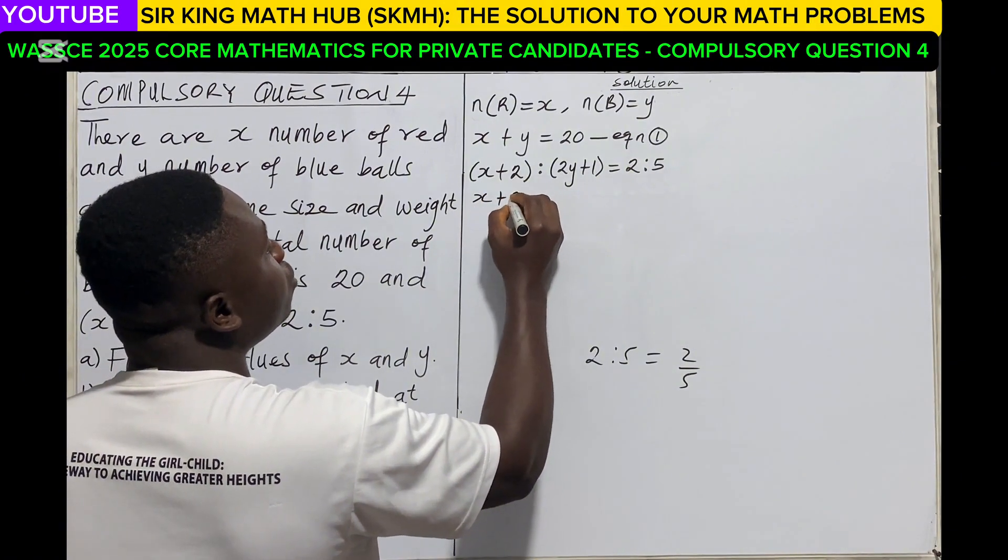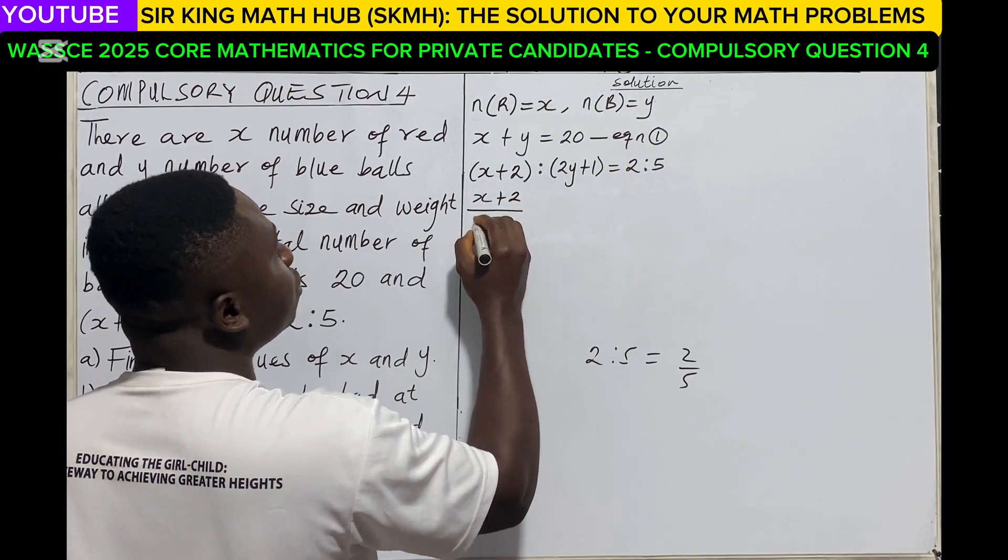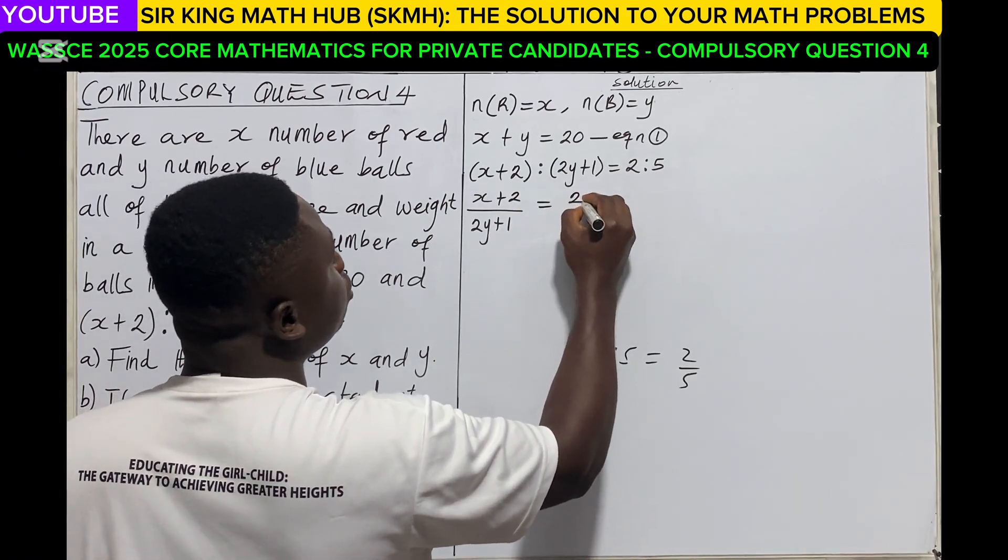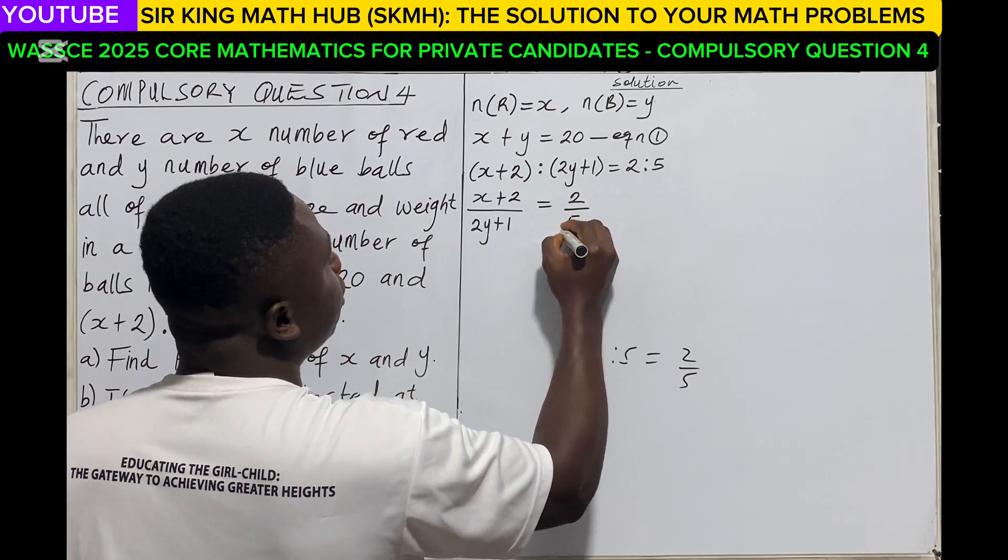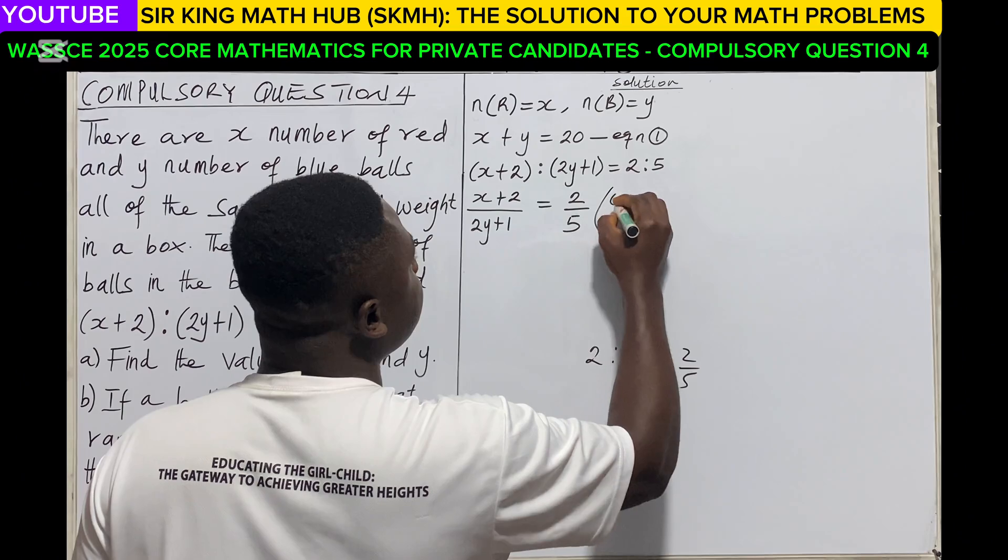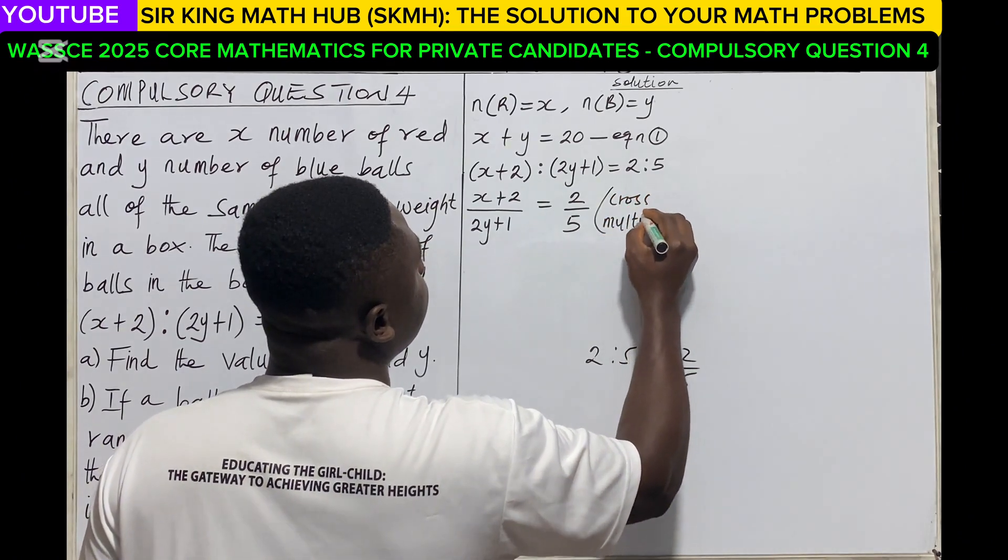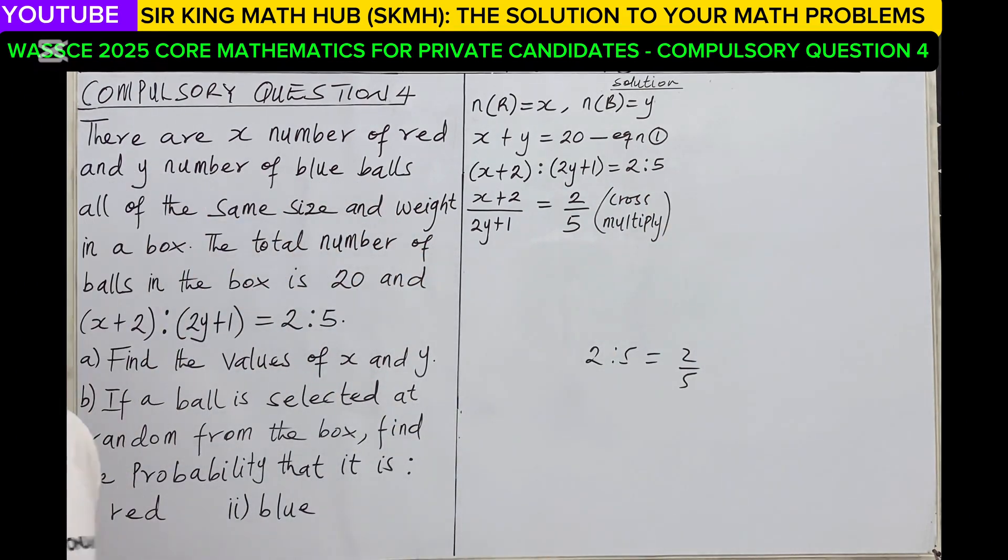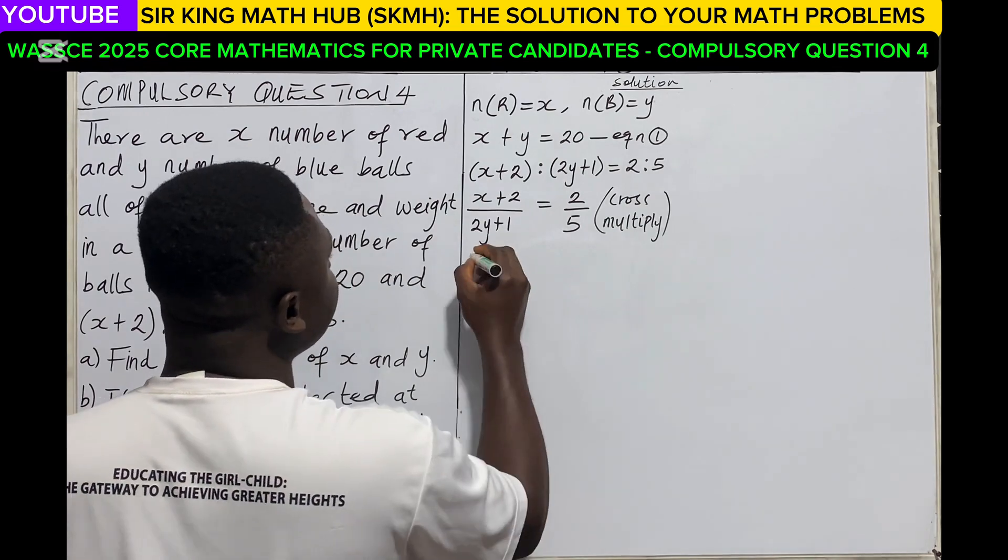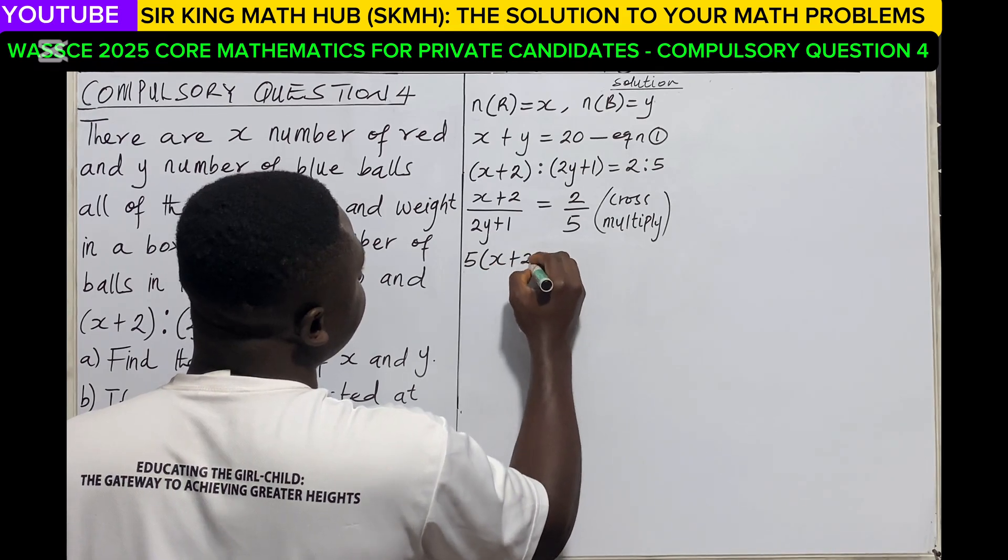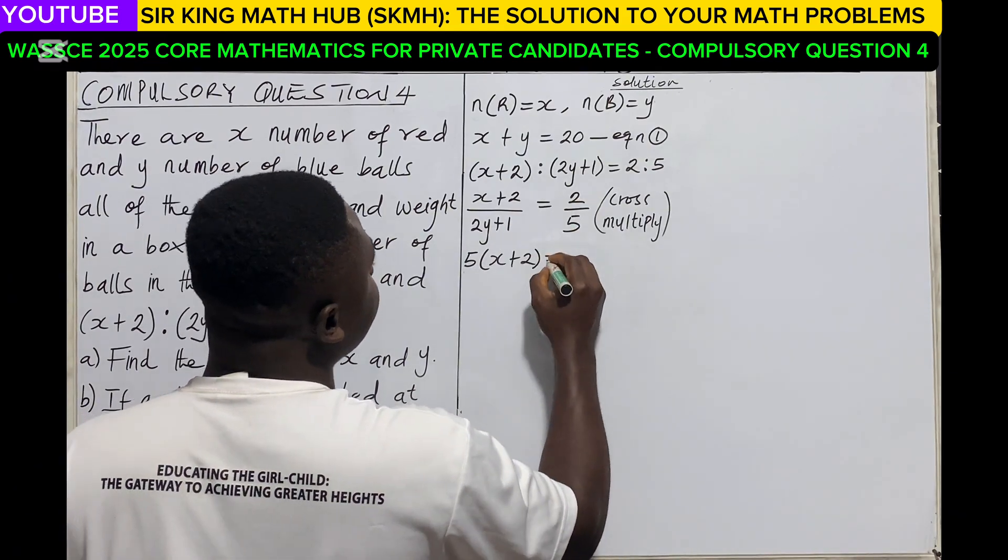So we have (x + 2) over (2y + 1), this must be equal to 2 over 5. At this point you can cross multiply. Multiply the numerator by the denominator, so multiply the numerator 5 with the numerator x + 2, and multiply the denominator 2 by the denominator 2y + 1.